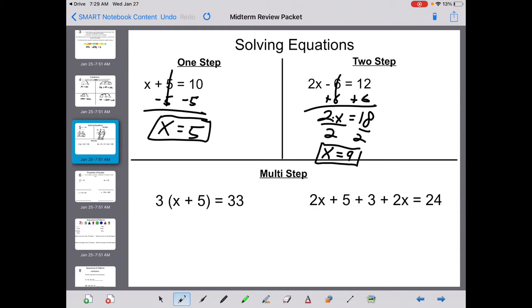Now multi-step, if you notice, we have distribution on one side and then we have combining like terms as our second equation on the other side. So it's just literally what we learned on the last page. 3 times x is 3x. 3 times 5 is 15, which equals 33. Subtract 15 on both sides. 3x equals 18. Divide by 3, divide by 3, 3s cancel, and x equals 6.